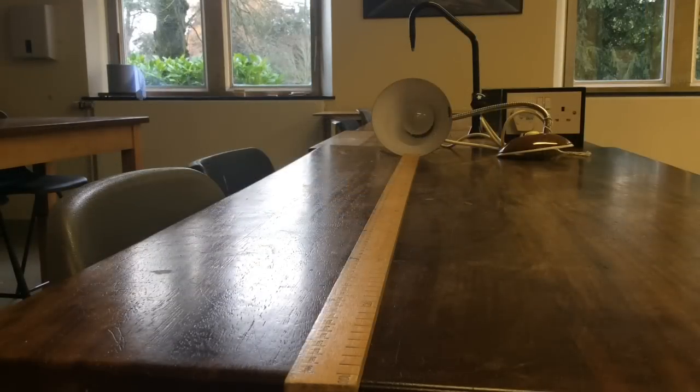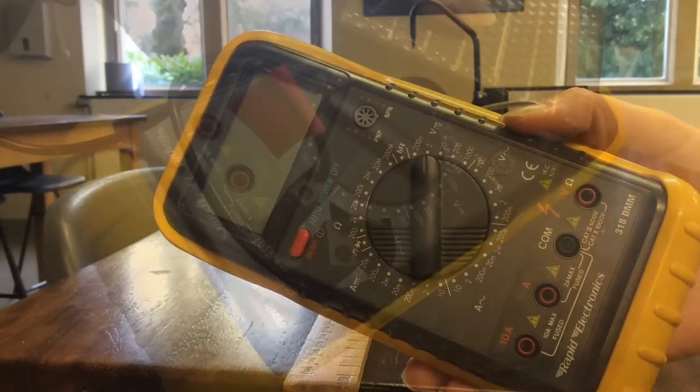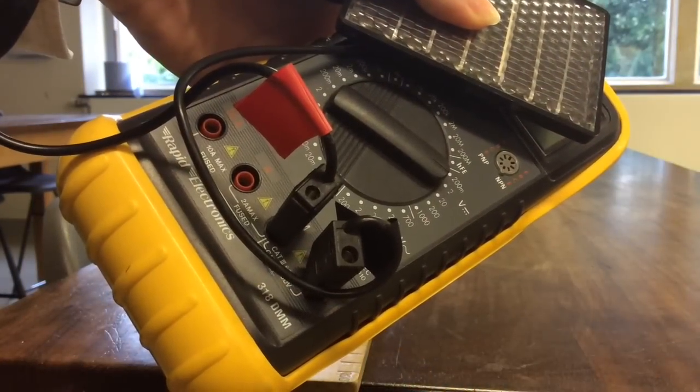Set up the lamp like this so that it's possible to measure the distance away from the lamp. The multimeter needs to be set to 2 volts. Plug the solar cell in like this.